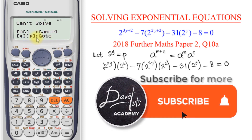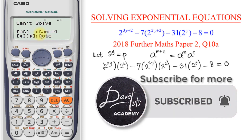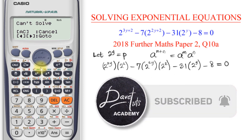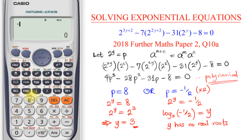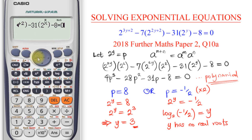The calculator says it cannot solve using zero as the initial value. I then try a negative number, say minus 5 — and again the calculator takes time and says it cannot solve. Because I know the answer is 3, which is positive, let me try a number greater than 3 — say 7.